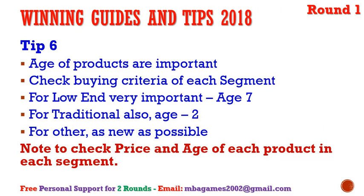Tip number six: product age is very important. Check the industry condition report each round to make sure you control all the buying criteria for each segment. Low-end prefers low price, but others may prefer age. For low-end, an age of about 5–7 years sells better than 1–2 years because low-end customers need product stability. For traditional, about 2 years old is preferred. For other segments, as new as possible.